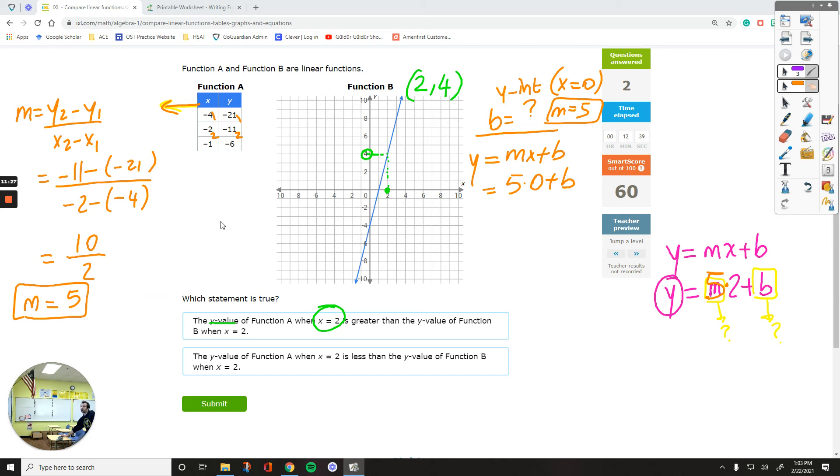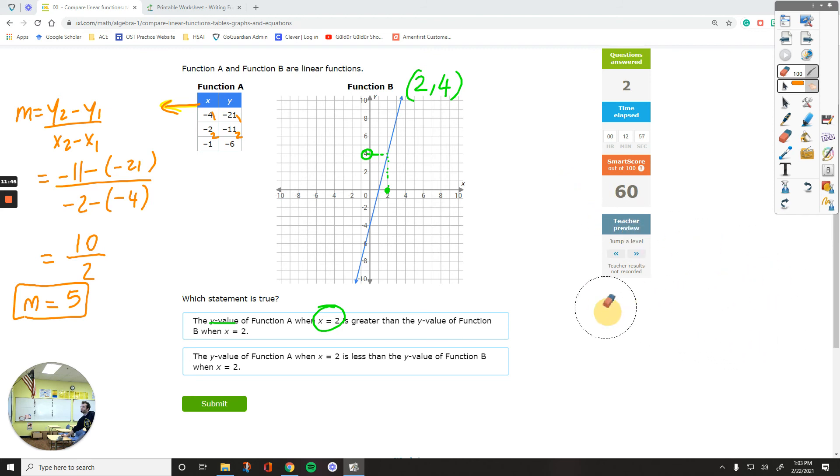I got it. So to find the b value, we are going to pick one of these rows to plug in. I will, for now, remove this from here. Let's just clear this side as well, just to make it less complicated. So once we find the slope, let's find the b value.